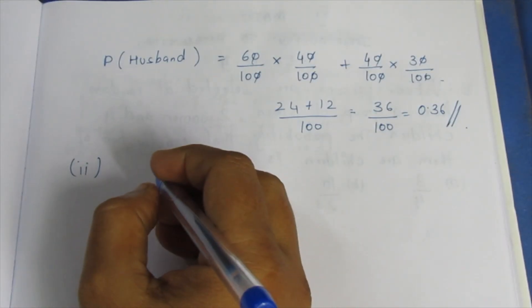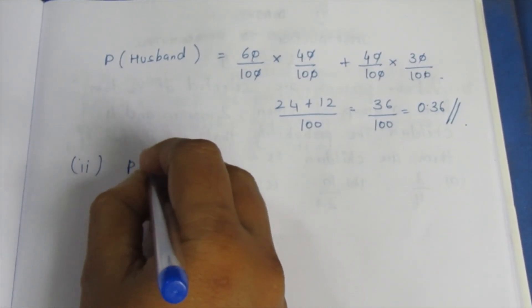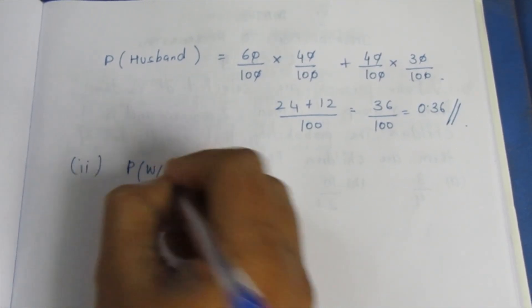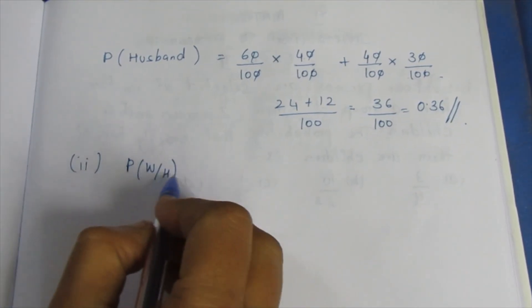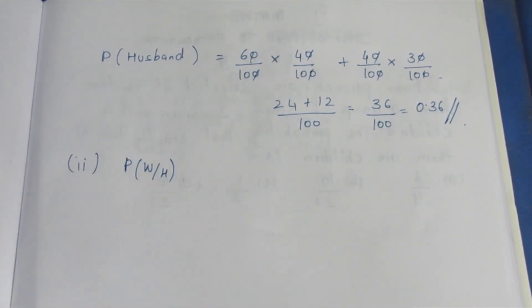In the second subdivision, both the husband and the wife are watching television. The probability when husband is watching given wife is also watching.